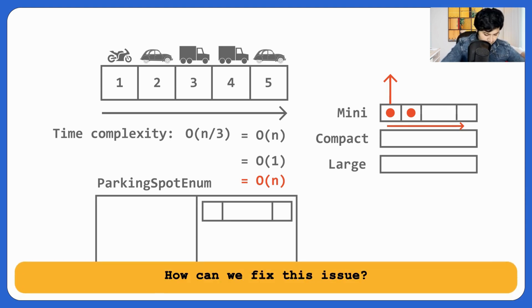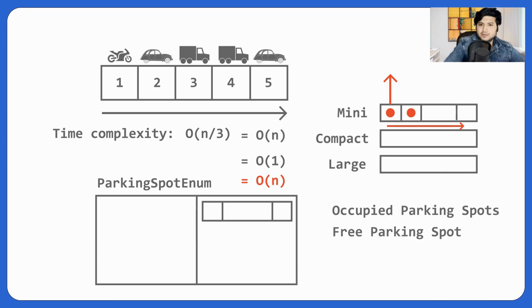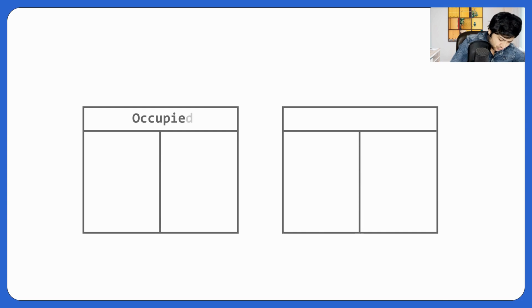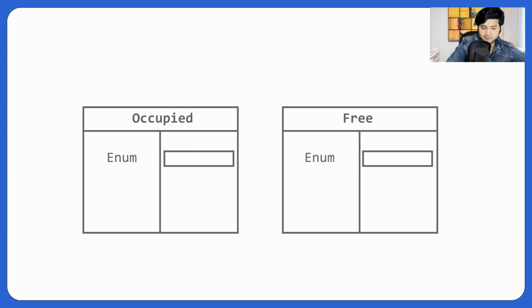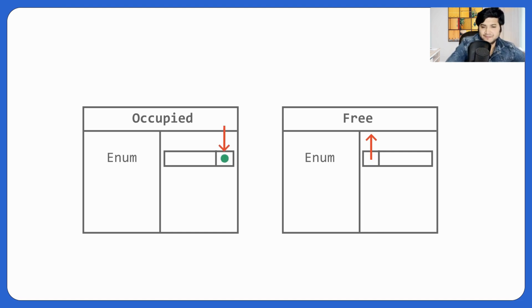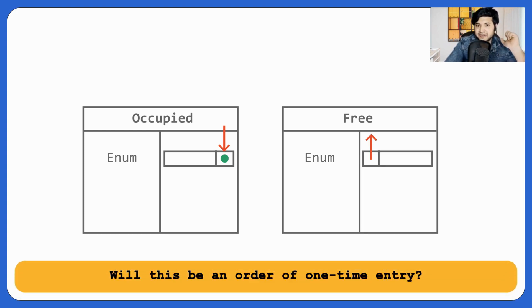How can we fix this? What if we maintain two maps — one for occupied parking spots and one for free parking spots? So we'll have two maps: 'occupied' and 'free', each having an enum and a list of that type of parking spot. Now if we want the nearest first, we'll return the first parking spot in the free list, pop it off, and put it in the occupied list.